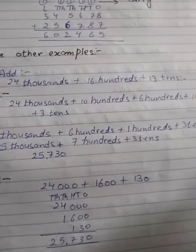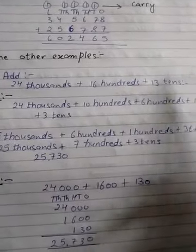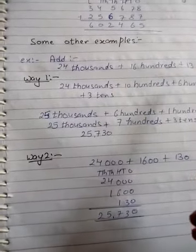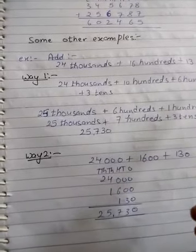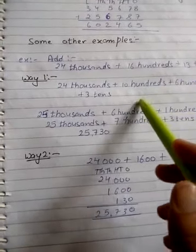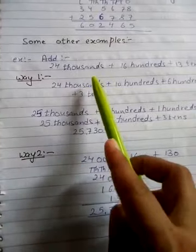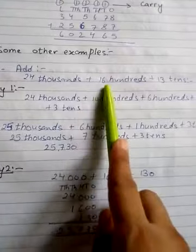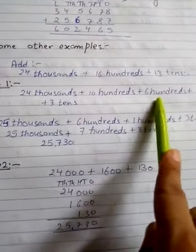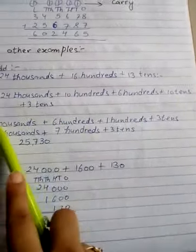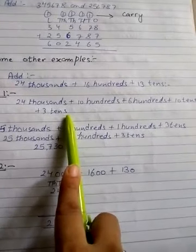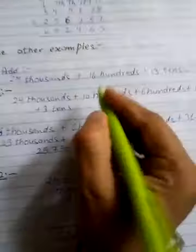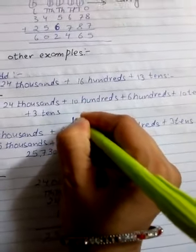There are two ways you can do this kind of sum. First way is 24 thousand - just break the place value which is given to the next highest. Like thousands is the highest place value, it's hundreds, so break 16 hundreds into two parts.